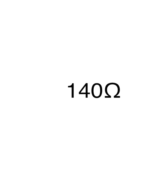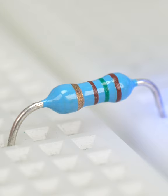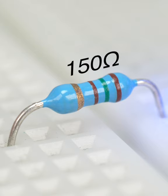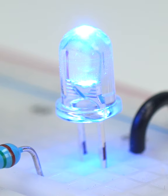In your actual circuit, use a resistor close to, but not below, that value. And your LED should stay bright and happy.